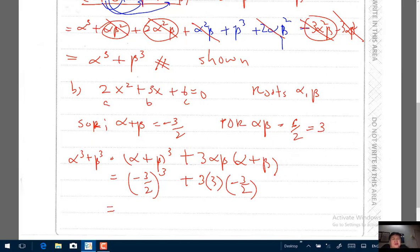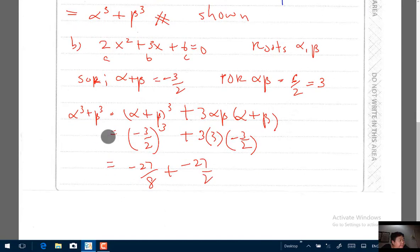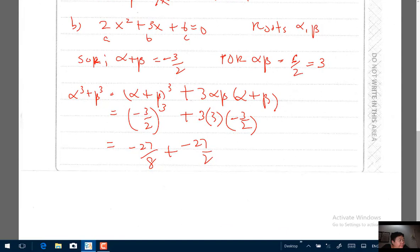Watch this carefully and you expand, you should be able to get it. So -27/8 plus -27/2. You work it out, it should be 81/8. You can leave your answer in fraction or in decimals, both are acceptable.